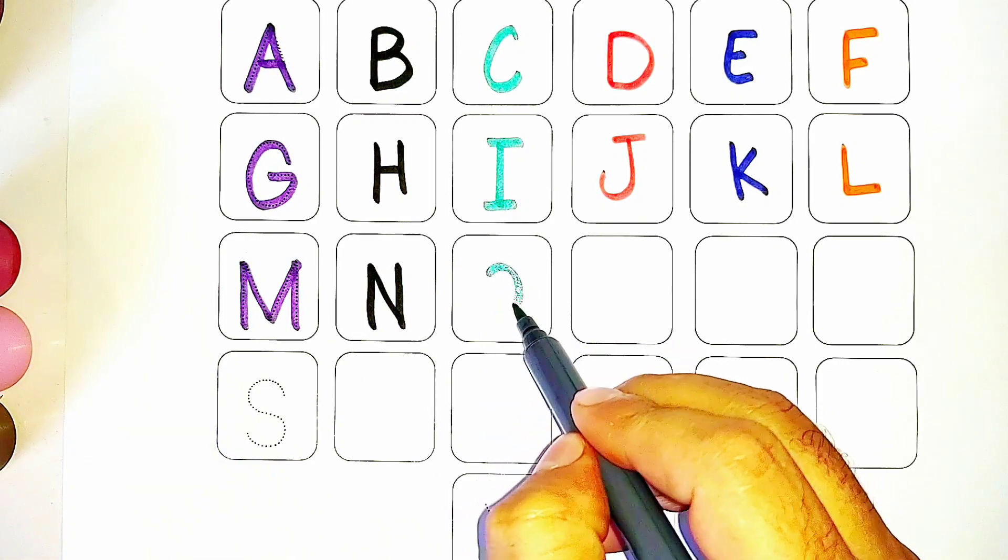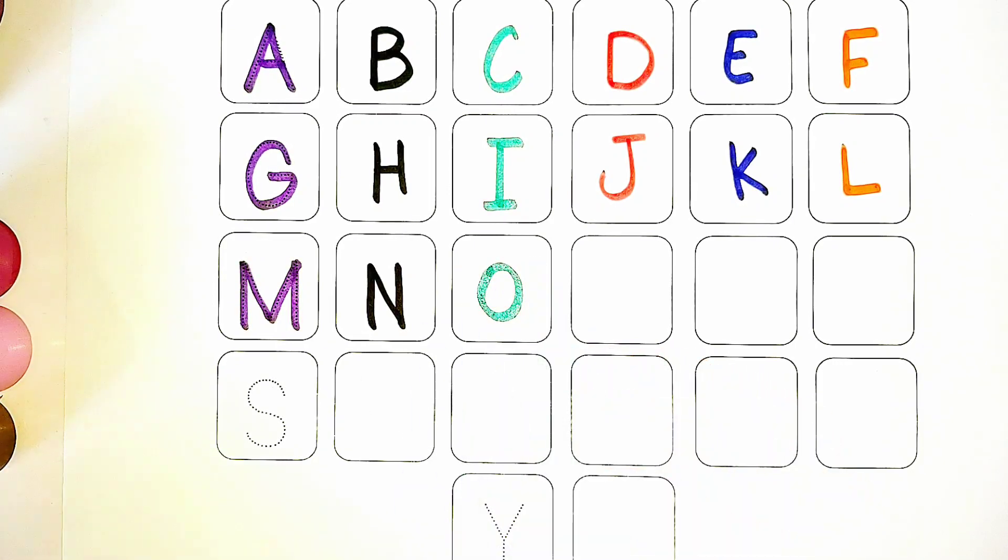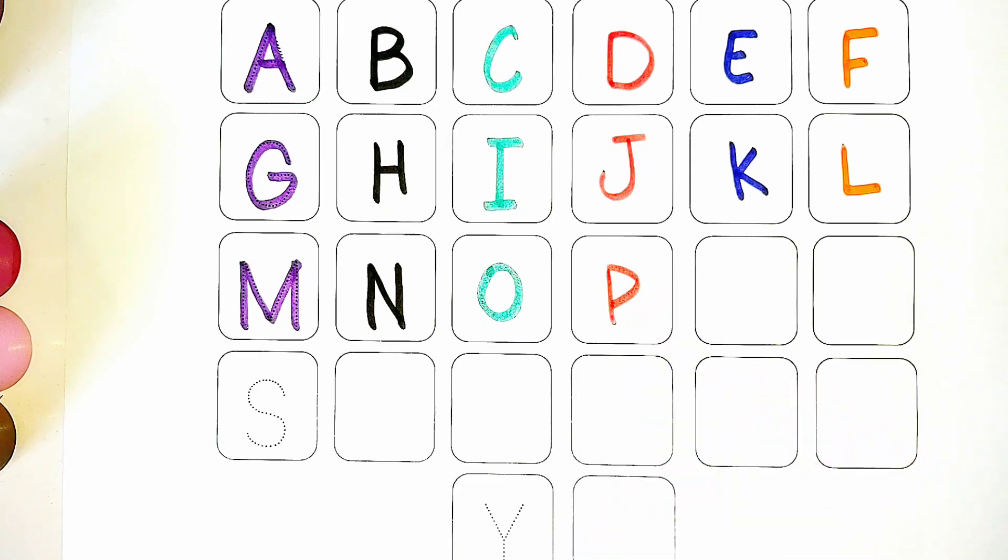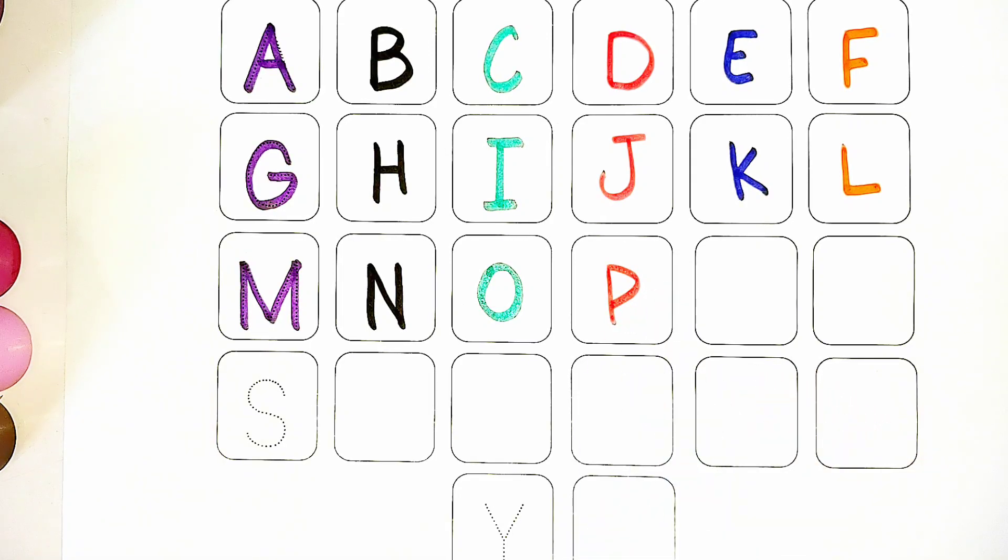O for orange, sea green color. P for parrot, red in color.